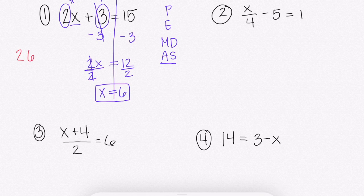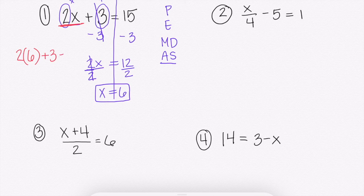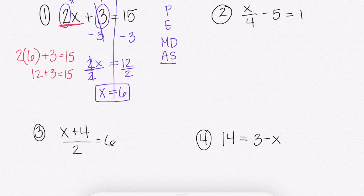Instead of x, we're going to put 6 because that's what we think x is. This does not become 26 — it was 2 times x. So make sure you put your parentheses there: it's 2 times 6, not 26, plus 3. That should get us 15. 2 times 6 is 12, plus 3 gives us 15. So we know x equals 6 is correct.